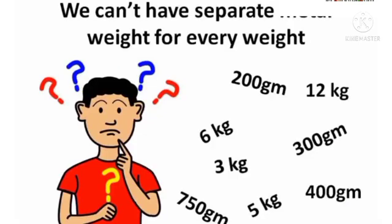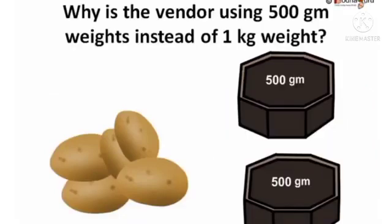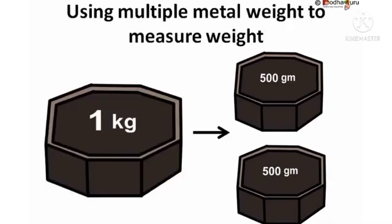But, we can't have separate metal weight for every weight. Then, how can we come to know the actual weight of the given things? Let's see. Look, here, to weigh 1 kg potato, why is the vendor using 500 gram weights instead of 1 kg weight? Do you know the reason?